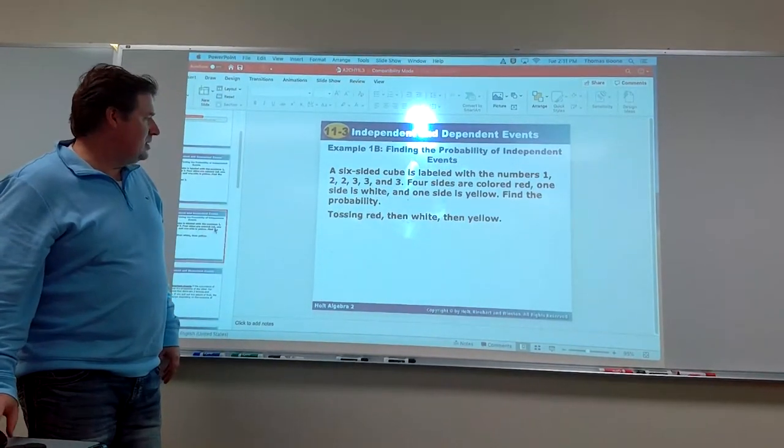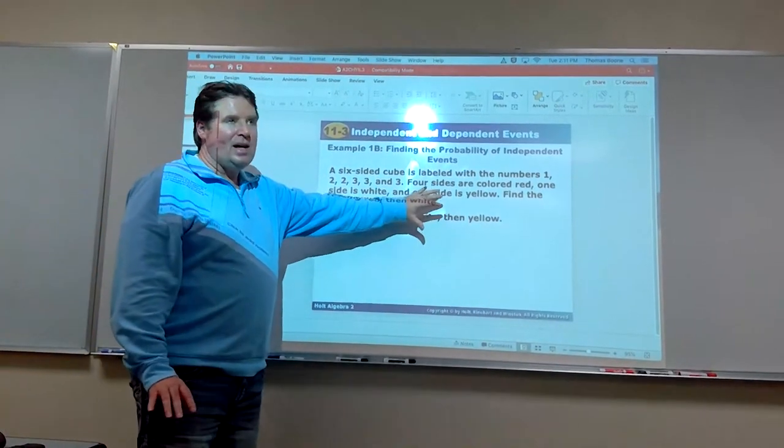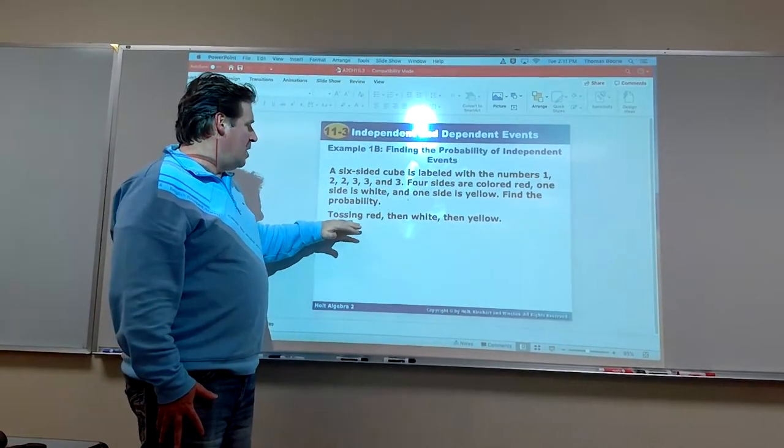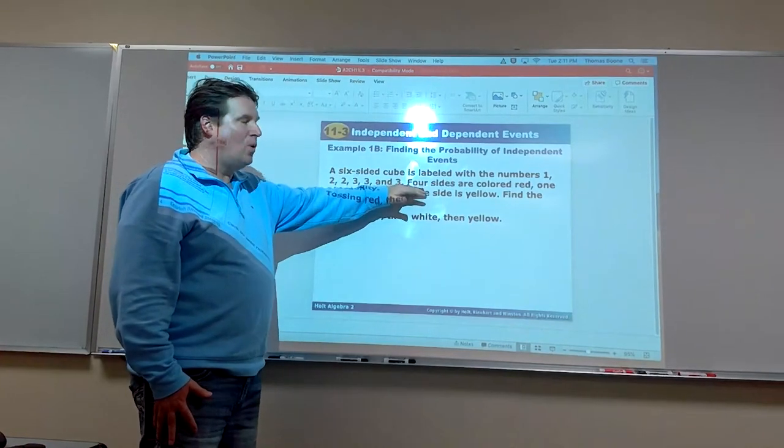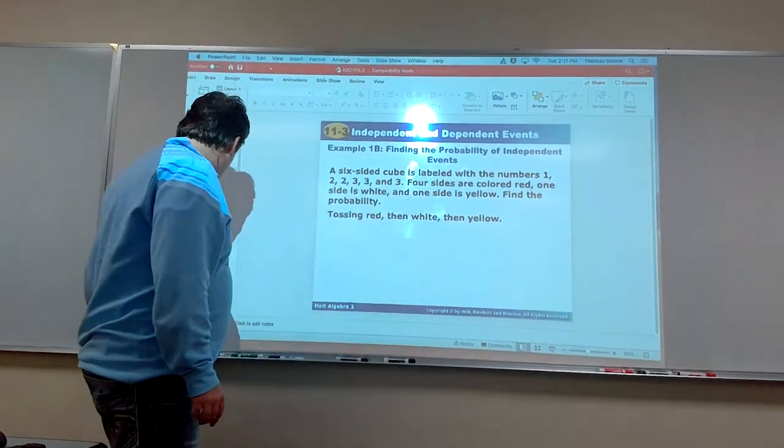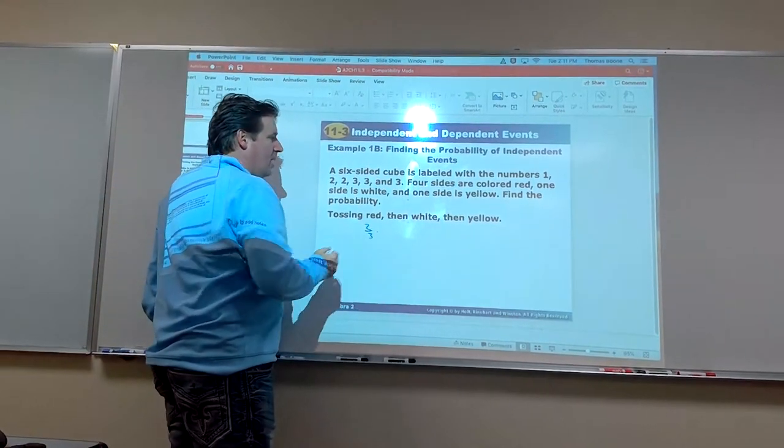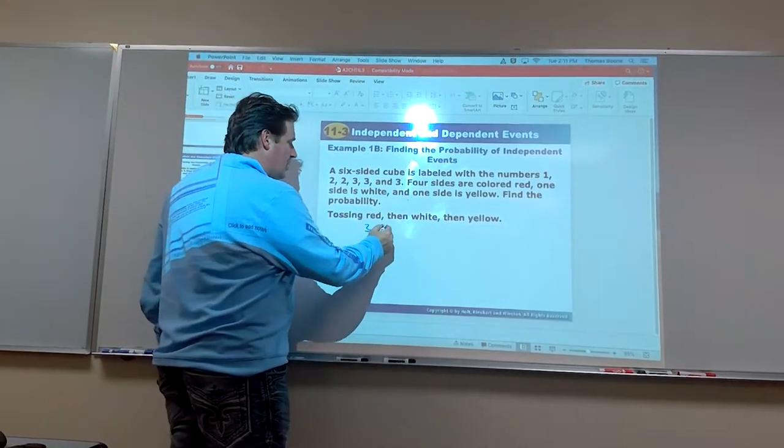Alright, let's take a look at this. Now same type of weird die that we have again. Four sides are colored red, one is white, and one is yellow. What's probably of tossing a red? Well, that's 4 out of 6, or 2/3. Probably should write that down. So 2/3. And then white. Well one side is white, so that's 1 out of 6.